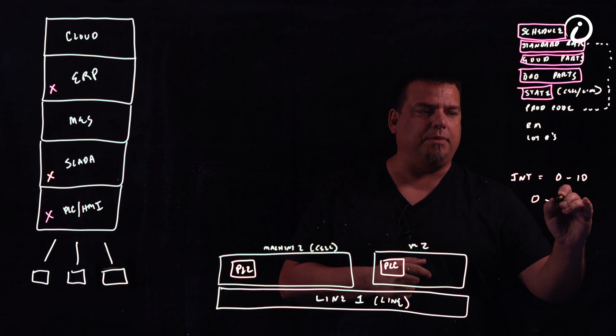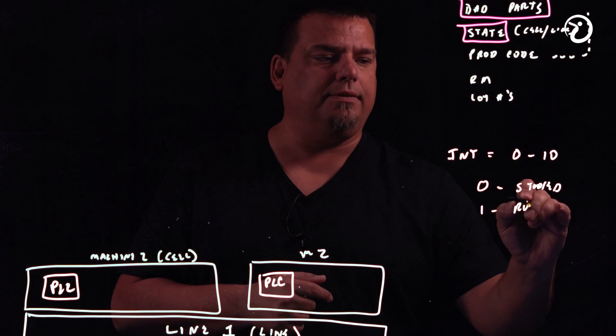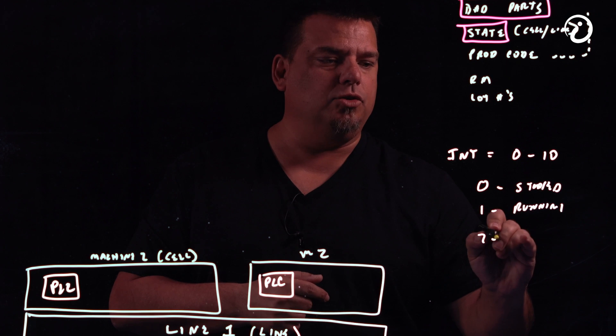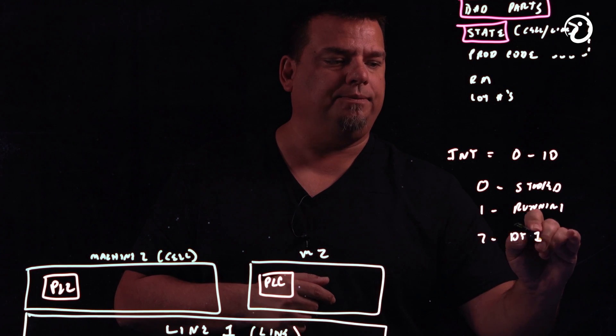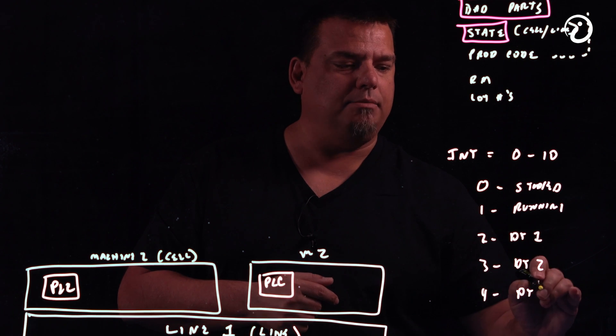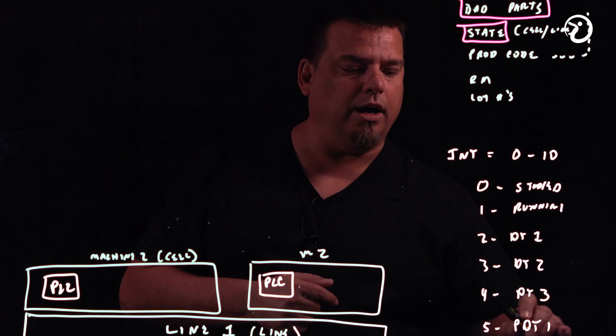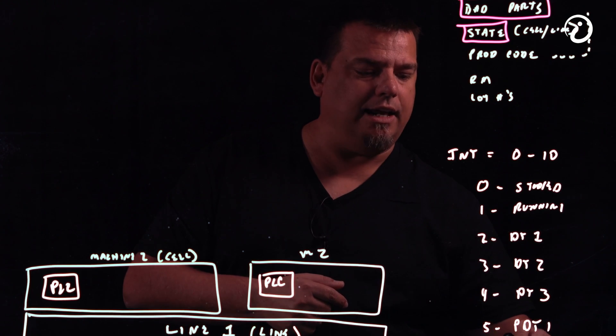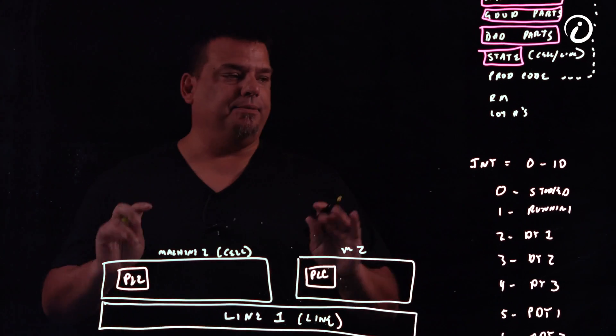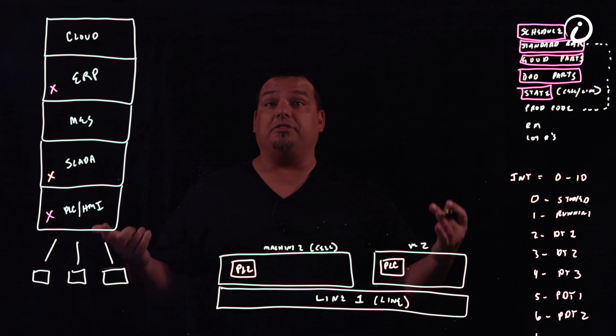So in our case, our matrix is zero equals stopped. We always reserve this. One is always running. Two could be downtime one. Three could be downtime two. Four could be downtime three. Five could be planned downtime one. Six could be planned downtime two. And all the way up to 10, right? Or up to nine.